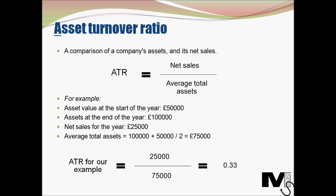The next type is asset turnover ratio, another type of efficiency ratio. It is essentially a comparison of a company's assets and its net sales — a measure of how efficiently a company uses its assets to generate sales. The formula is: asset turnover ratio equals net sales divided by average total assets. The higher the ratio, the better a company is managed. Average total assets is calculated by adding asset values at the beginning and end of the year and dividing by two.